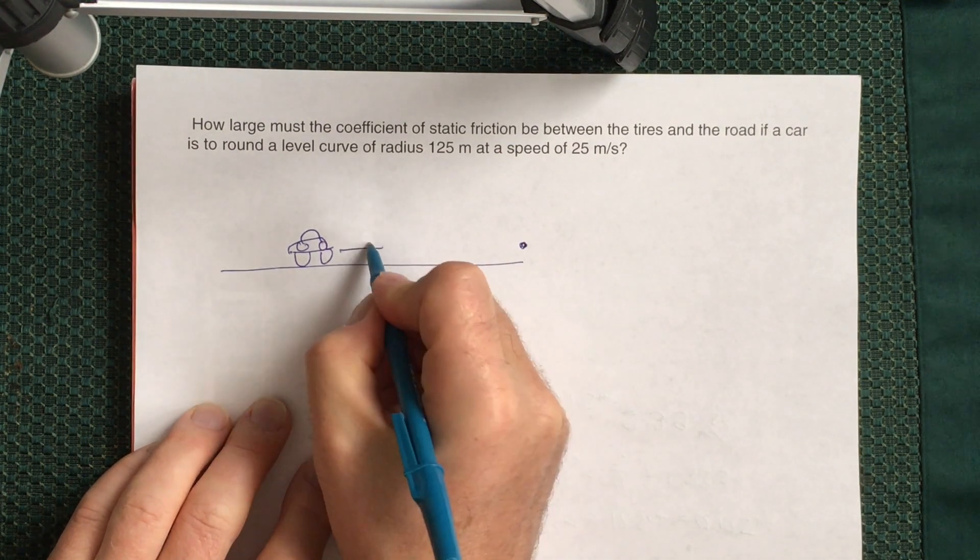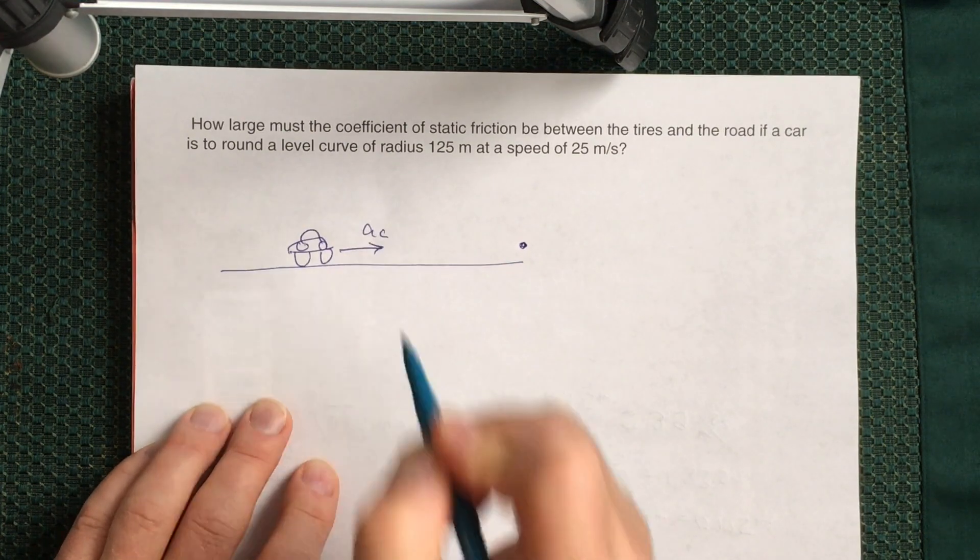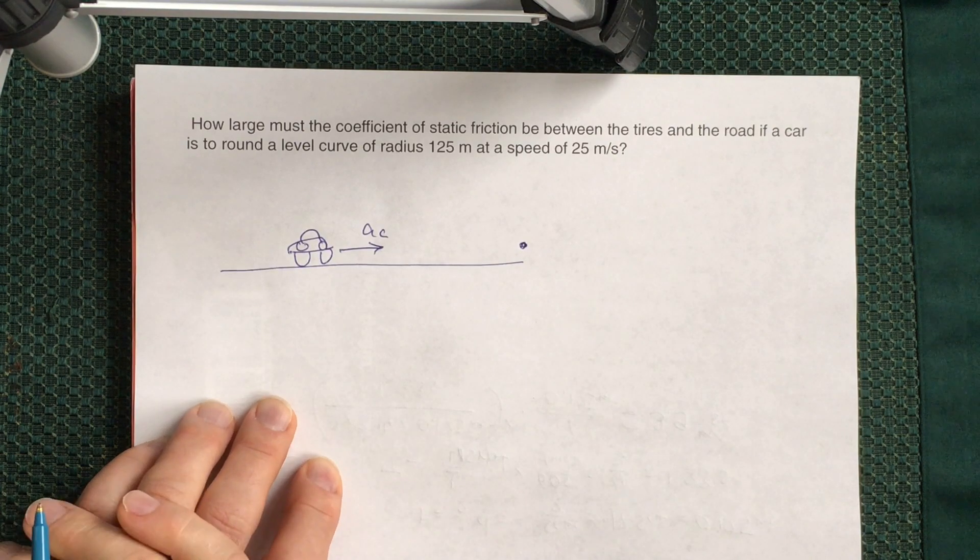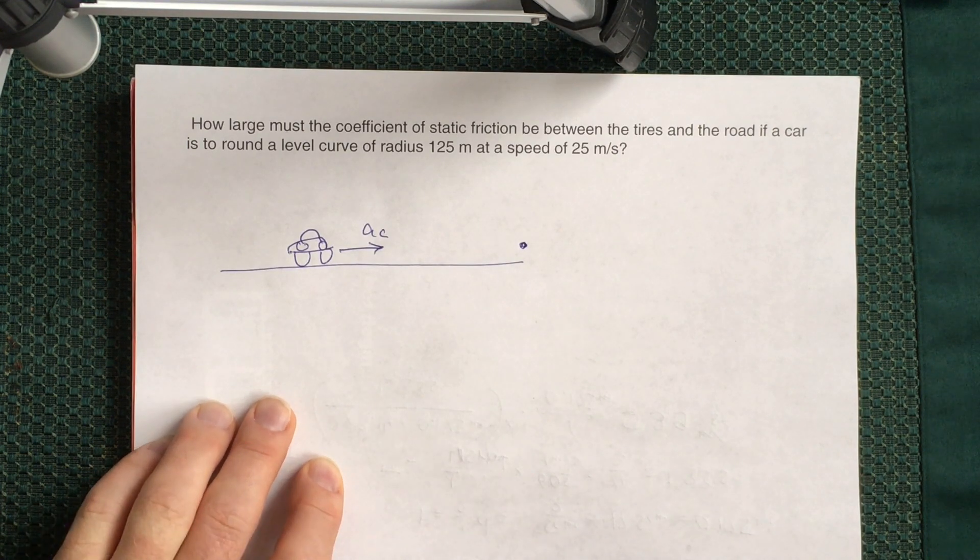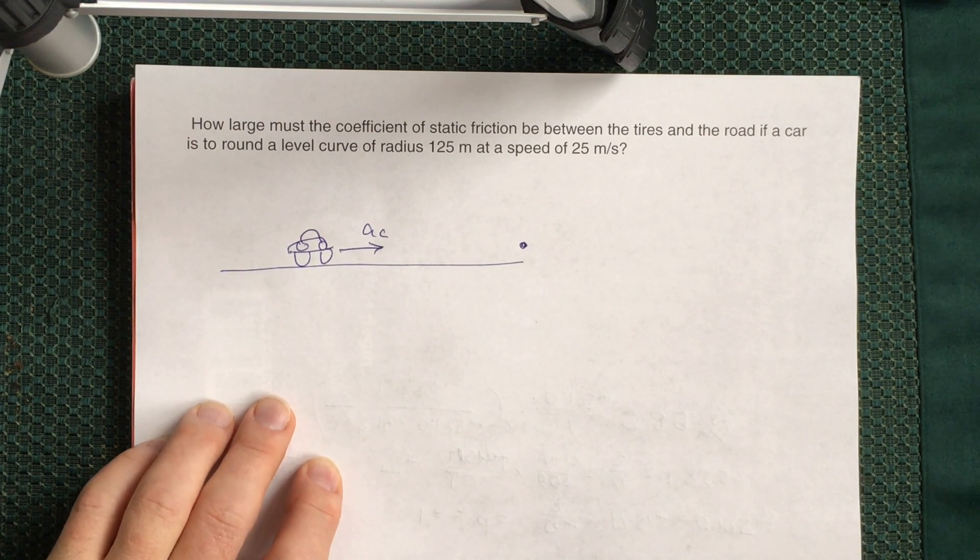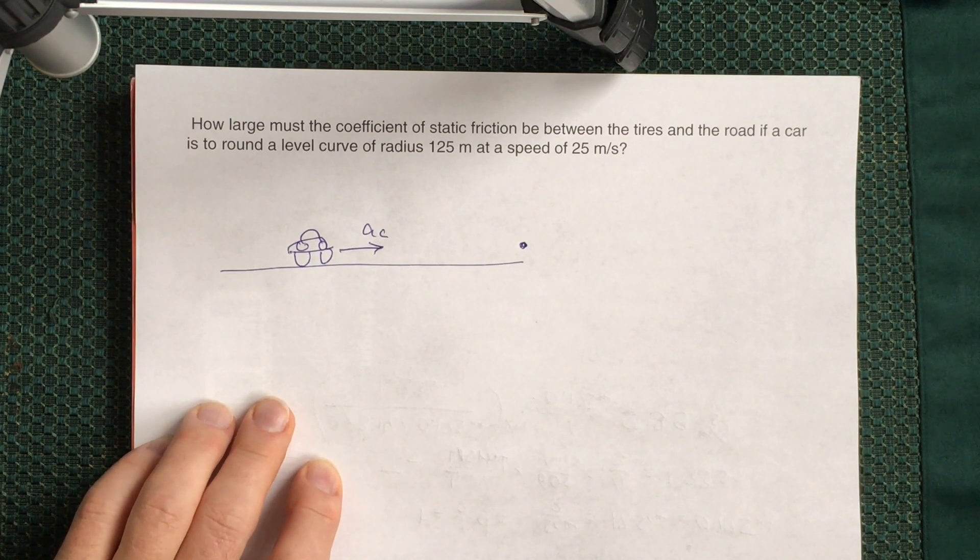In this case we'll have centripetal acceleration which always points to the direction where you have your center of the circle, over which arc you move.